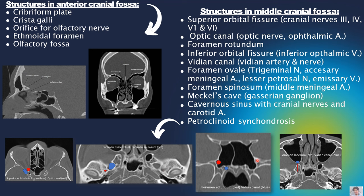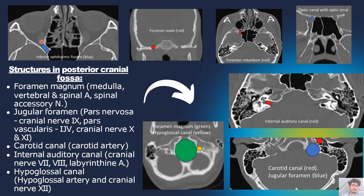The coronal section shows the sphenoid sinus and pterygoid plates. Laterally, foramen rotundum in red transmits the maxillary nerve, and inferomedially the vidian canal transmits the vidian nerve and artery. On axial section, the vidian canal connects with the middle cranial fossa via foramen lacerum. The inferior orbital fissure transmits the inferior ophthalmic vein and nerve. Foramen ovale and foramen rotundum are also shown, and the coronal section demonstrates the optic canal with the optic strut separating it from the superior orbital fissure.